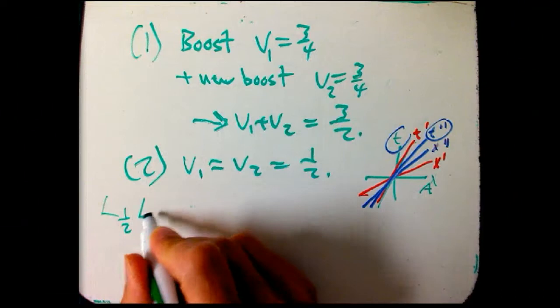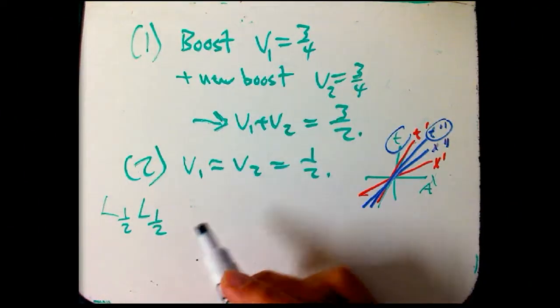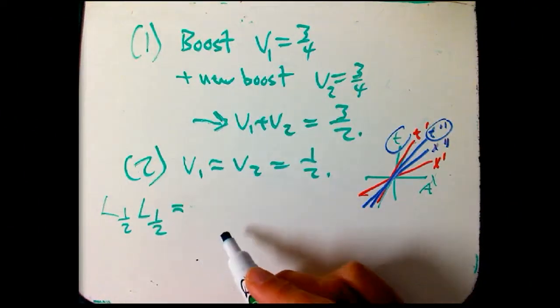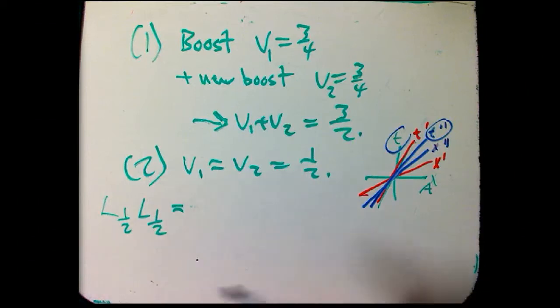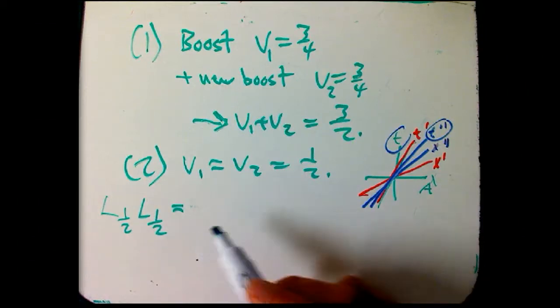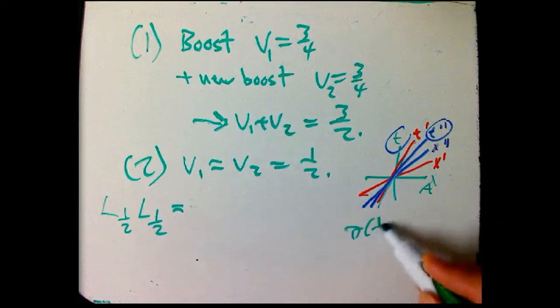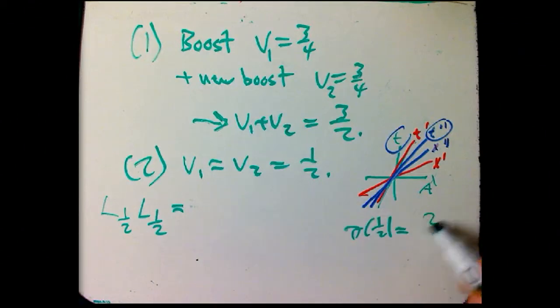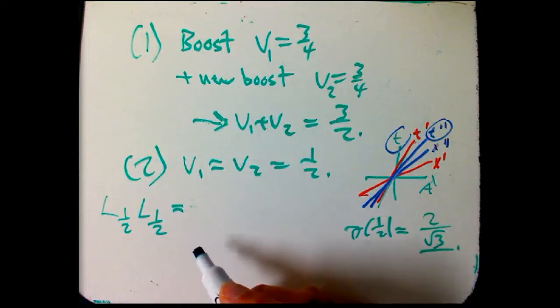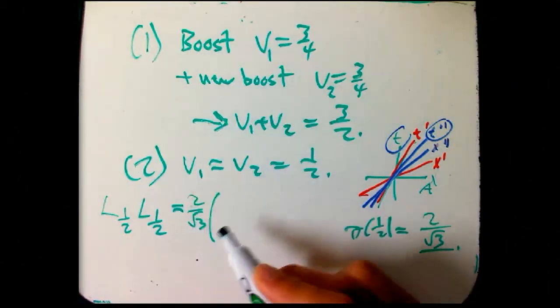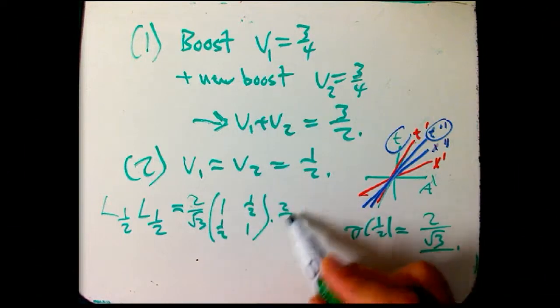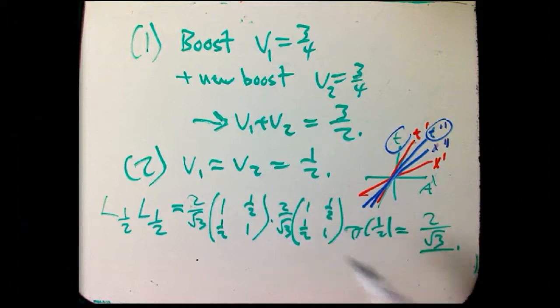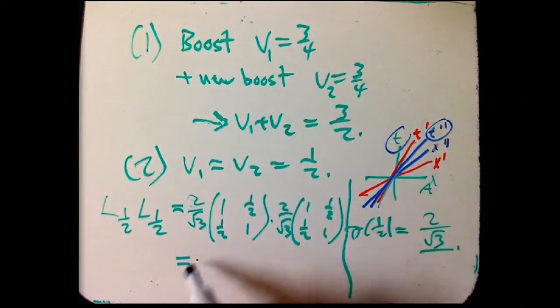We can just answer it using the transformations we've had. We're going to do two Lorentz transformations with velocity one half. And then we're going to see, is the composition, the product of those two matrices, is that a Lorentz transformation, and if so, for what velocity? It better be a Lorentz transformation, or else this doesn't make any sense. And we can figure out the velocity. So what's the gamma for one half? It turns out to be 2 over root 3. So what we get is 2 over root 3, and then 1, one half, one half, 1, times itself. I could just write squared, but if we want to be able to see how these matrices multiply out, it's probably a good idea to write it out.